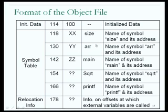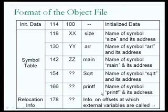Finally, there is the relocation information, which contains information on the offsets at which external variables are called. This clearly is some information which is going to be very important for some later step of GCC.